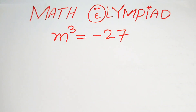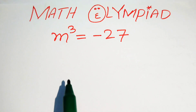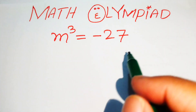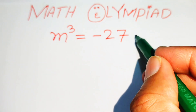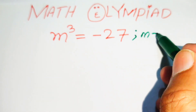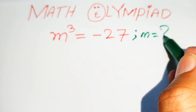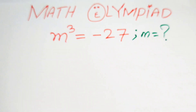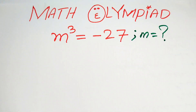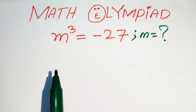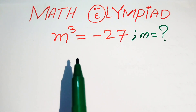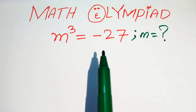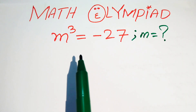Hello everyone, welcome. We are going to solve this Math Olympiad algebra problem. Here we have m cubed equals minus 27, and we solve this problem for the values of m. The exponent of m is 3, which means we need to find the 3 roots of this equation, or we find the cubic root of this equation.